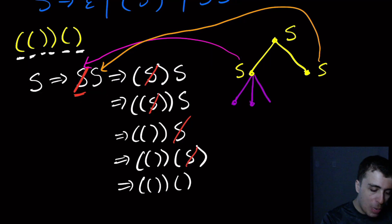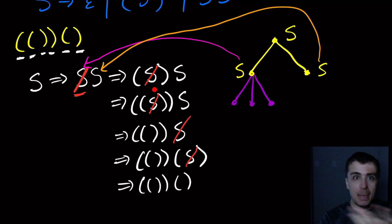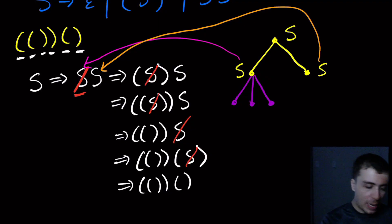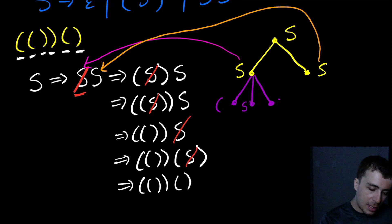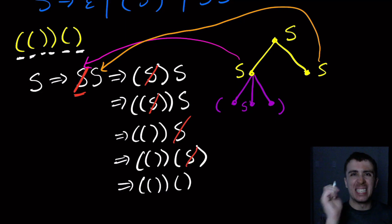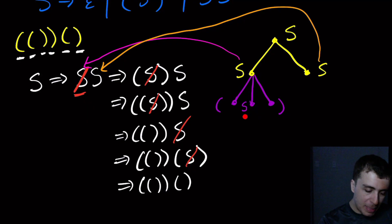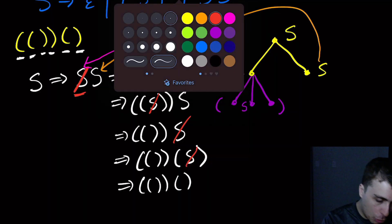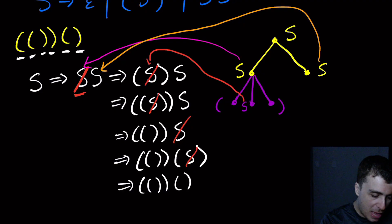This node is going to have three things under it: the left parenthesis, which is a terminal; S, which is a variable - variables can appear as nodes in this tree; and then the right parenthesis. The nodes corresponding to the left and right parenthesis, because they are terminals, are not going to have any children under them. In a context-free grammar, we can only replace a single variable with stuff - we can't replace a terminal with anything. But this S, because we replaced it with stuff, is going to have children.